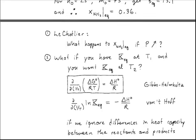We can ask what would happen if we ran this reaction at higher pressure. Since we're taking two moles of gas and converting them into one, as pressure increases this helps drive the reaction to the right. So we expect the equilibrium mole fraction of ammonia to get larger as pressure increases.